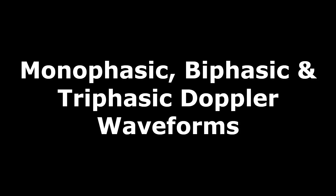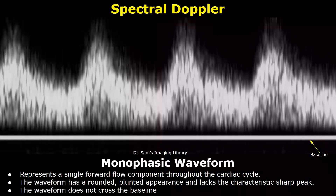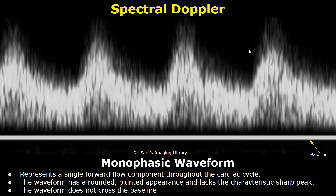Hello everyone, this is Dr. Sam. This video is about monophasic, biphasic, and triphasic Doppler waveforms. This is a spectral Doppler waveform which is seen in blood vessels during a spectral Doppler study. This line is the baseline.